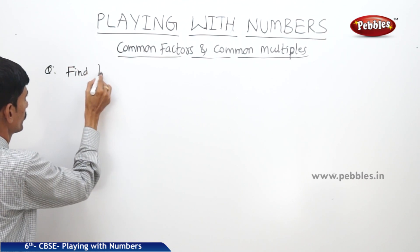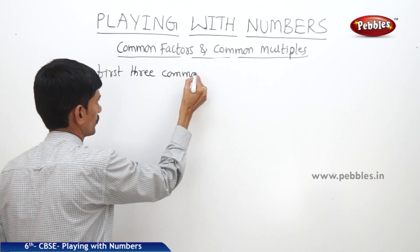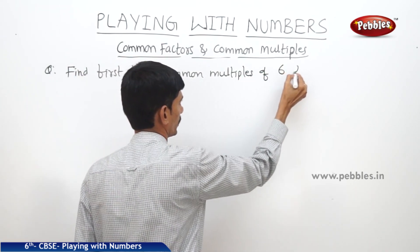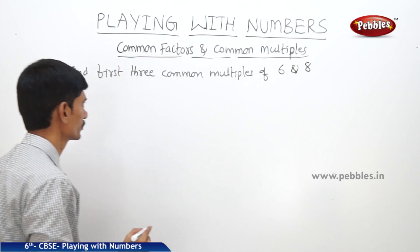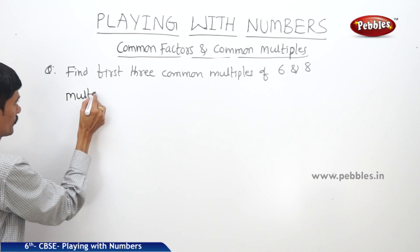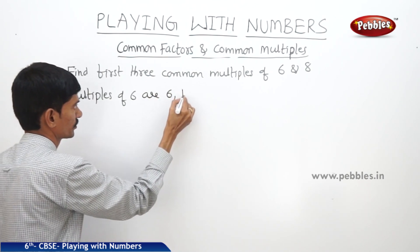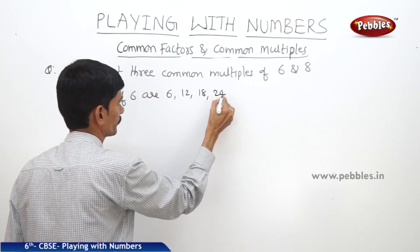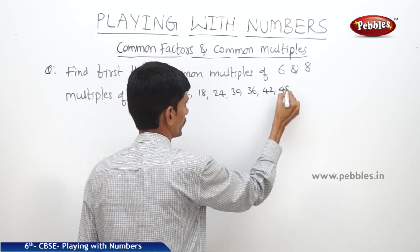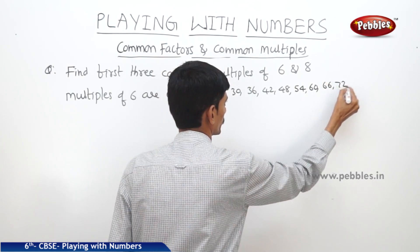Find the first 3 common multiples of 6 and 8. Let us write the multiples of 6: 6, 12, 18, 24, 30, 36, 42, 48, 54, 60, 66, 72 and so on.